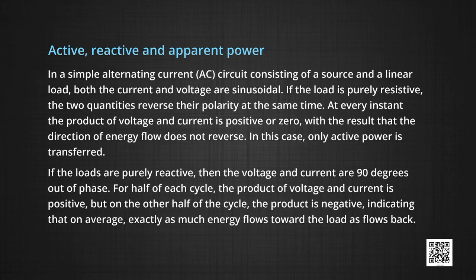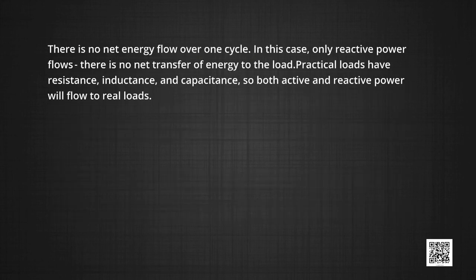If the load is purely reactive, the voltage and current are 90 degrees out of phase. For half of each cycle, the product of voltage and current is positive, but on the other half of the cycle the product is negative, indicating that on average exactly as much energy flows toward the load as flows back. There is no net energy flow over one cycle. In this case, only reactive power flows — there is no net transfer of energy to the load.